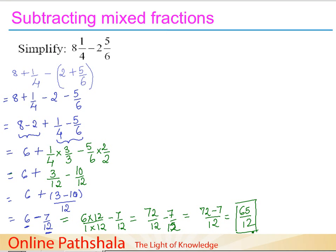We can also convert this improper fraction — since 65 is greater than 12 — into a mixed fraction. 12 times 5 is 60, and 65 minus 60 is 5, so the mixed fraction form is 5 5/12, and that is your final answer.